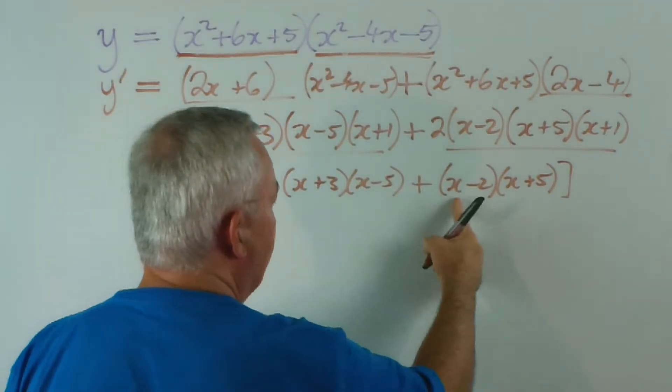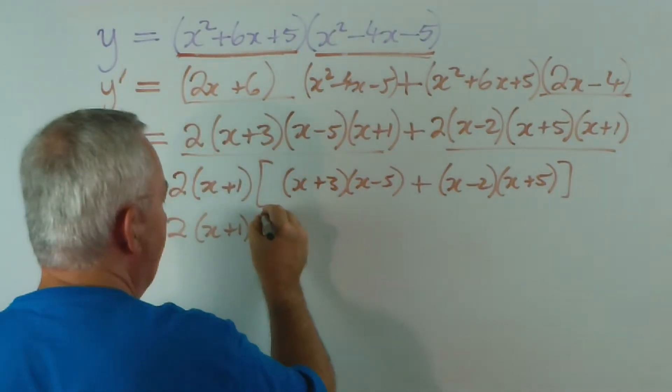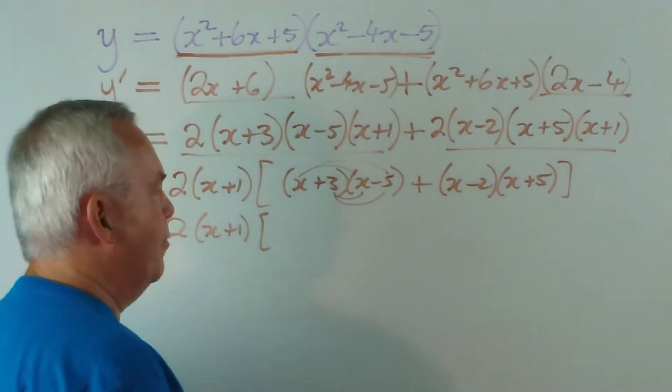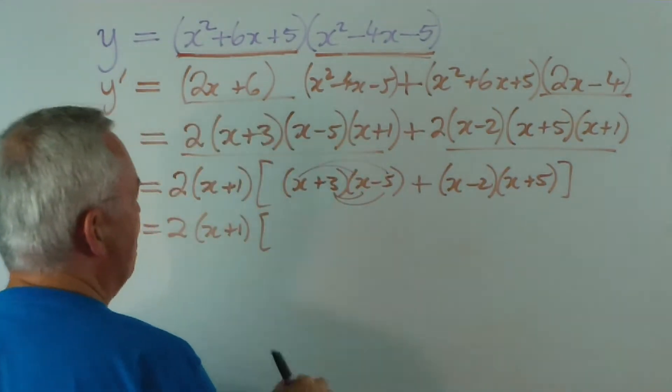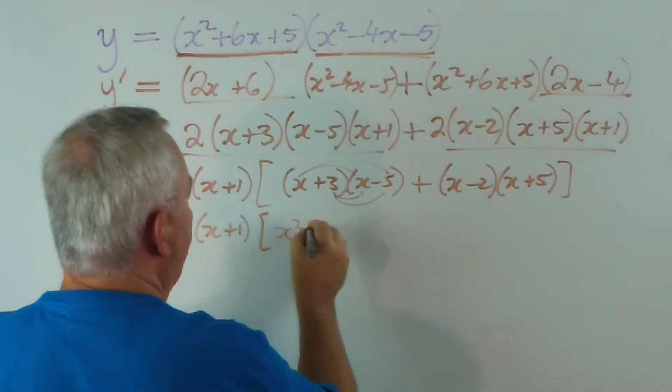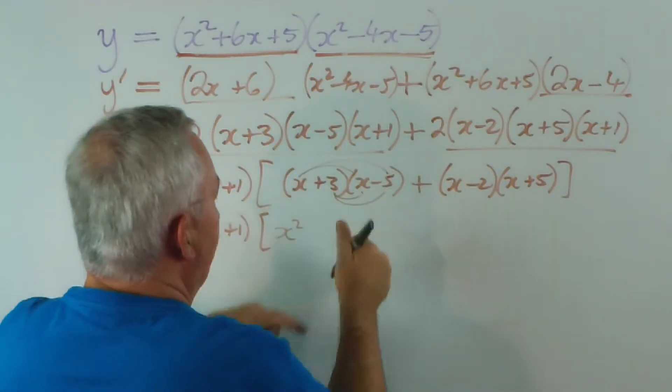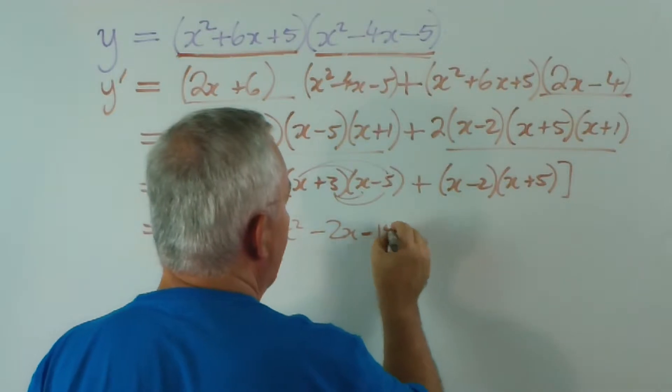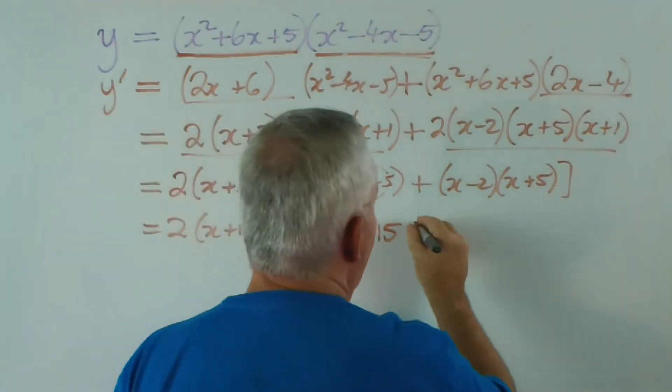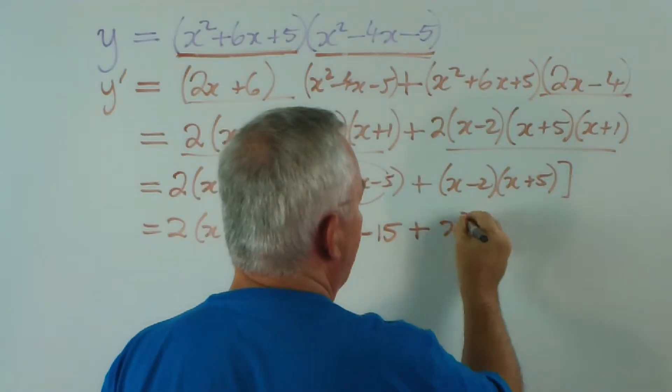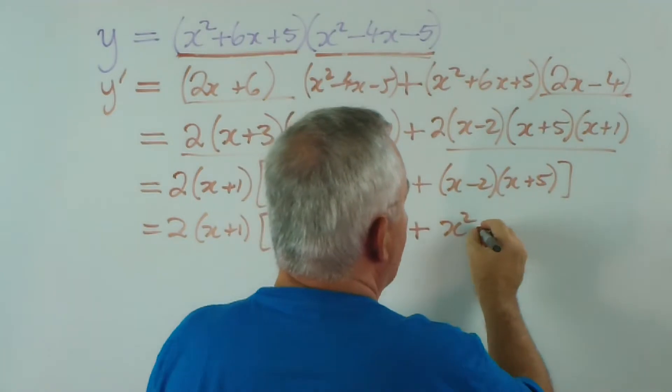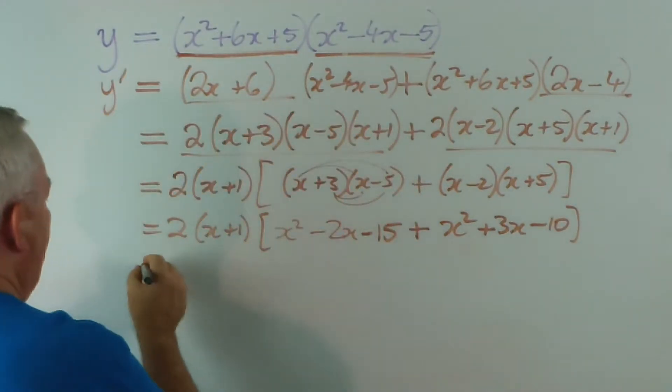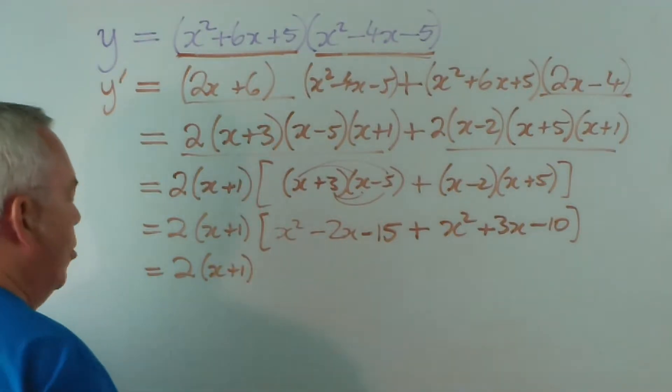So we're going to expand that quadratic and expand that quadratic, or binomial product. This will expand too. I use this pattern. I refer to it as the claw. A lot of people use foil and things like that. But anyway, we get x squared minus 5x plus 3x is minus 2x, and 3 times minus 5 is minus 15. Here, we get plus x squared plus 5x minus 2x is plus 3x minus 10.